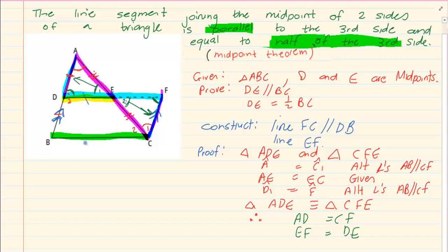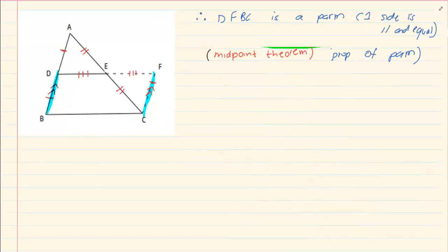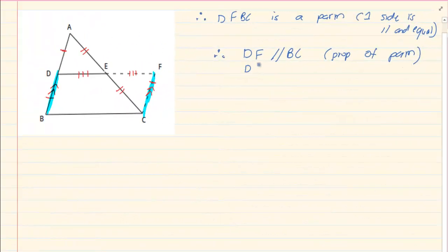So DE is parallel to BC. But DE is line DEF. So we have just done the first part. We have proven that DE is parallel to BC.